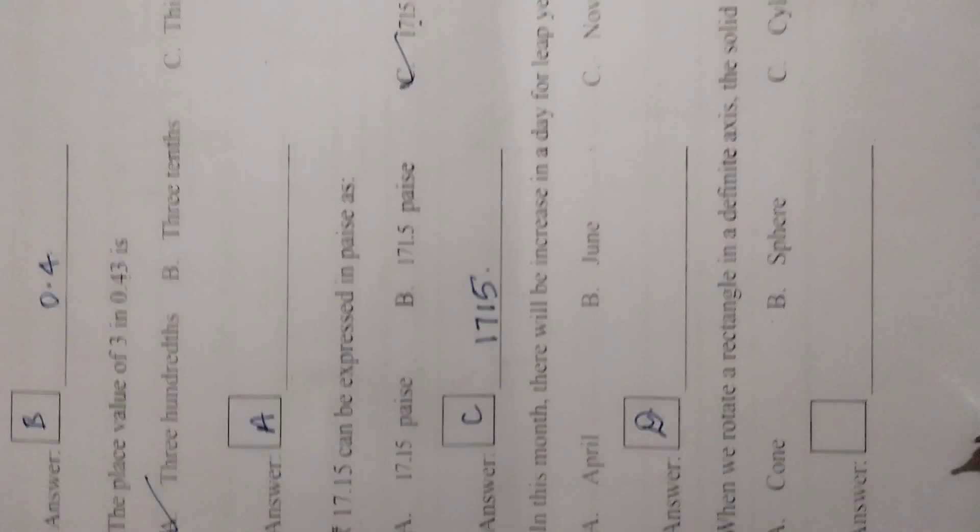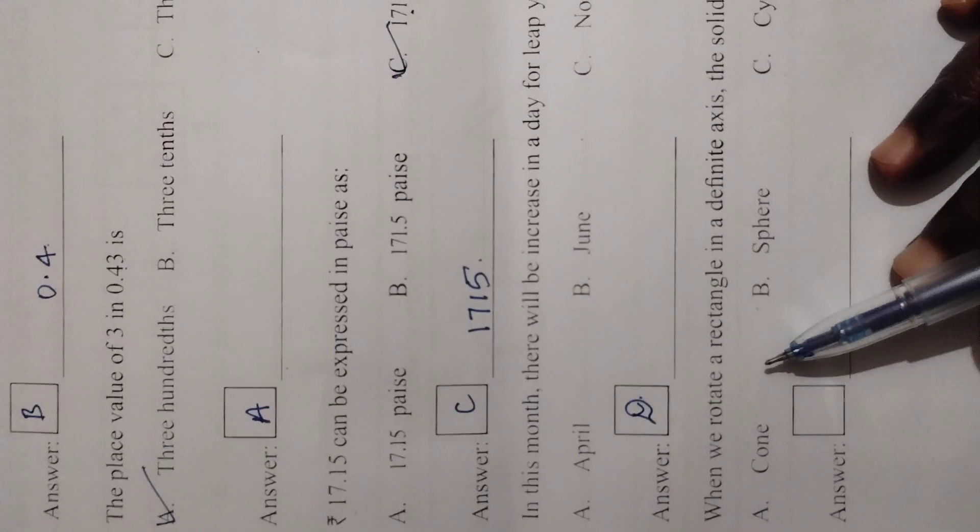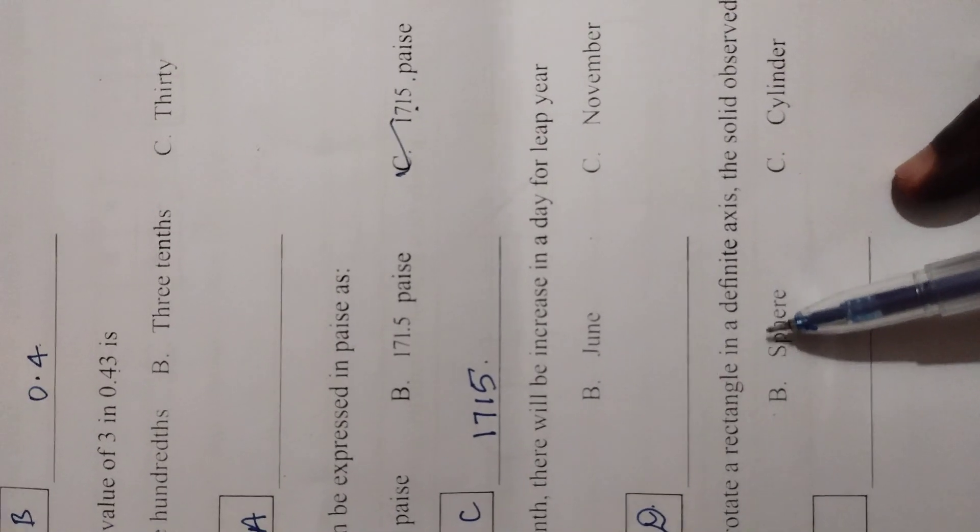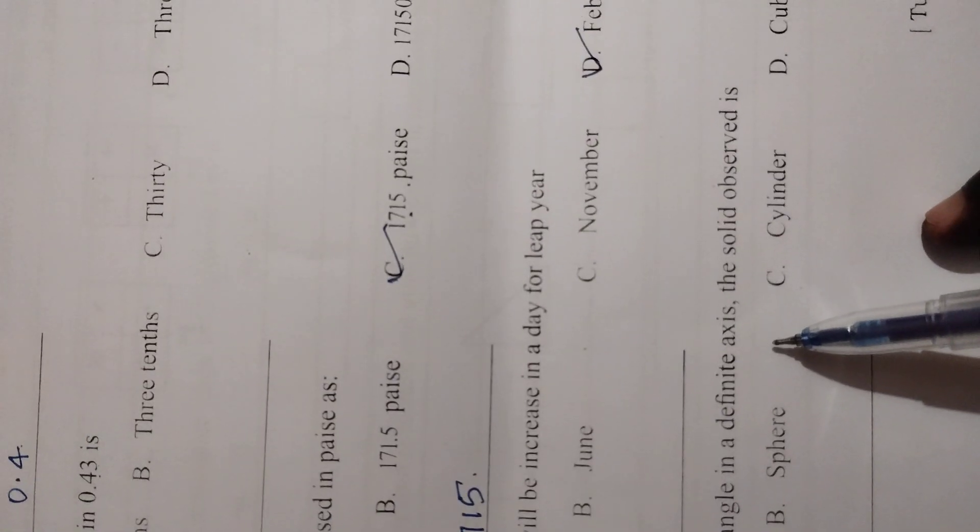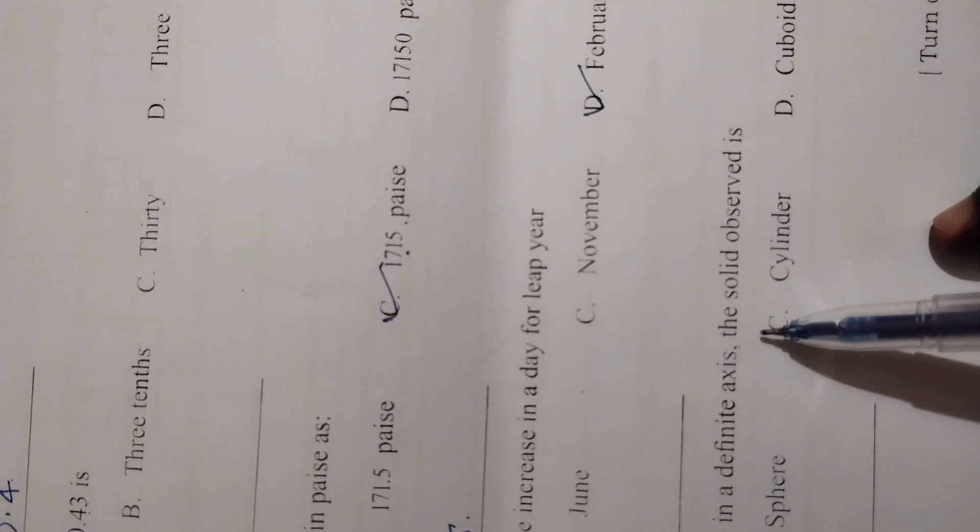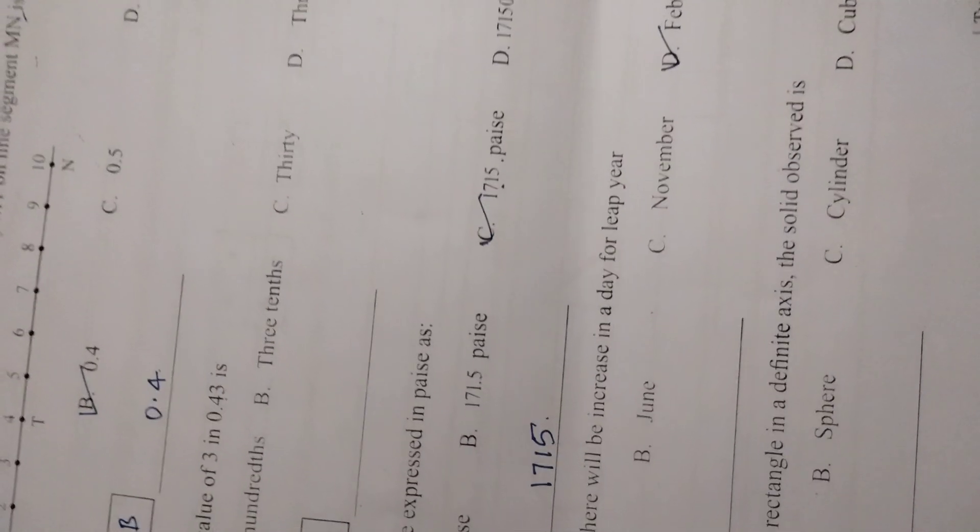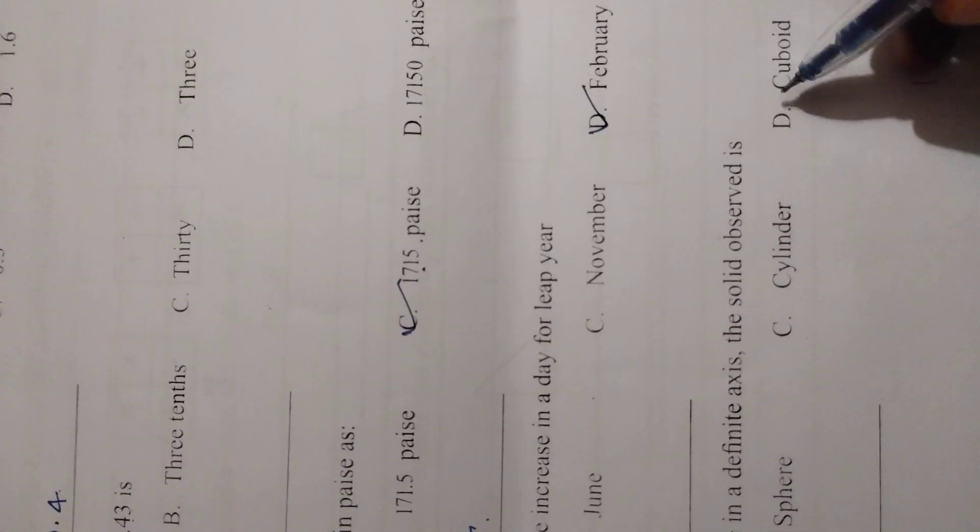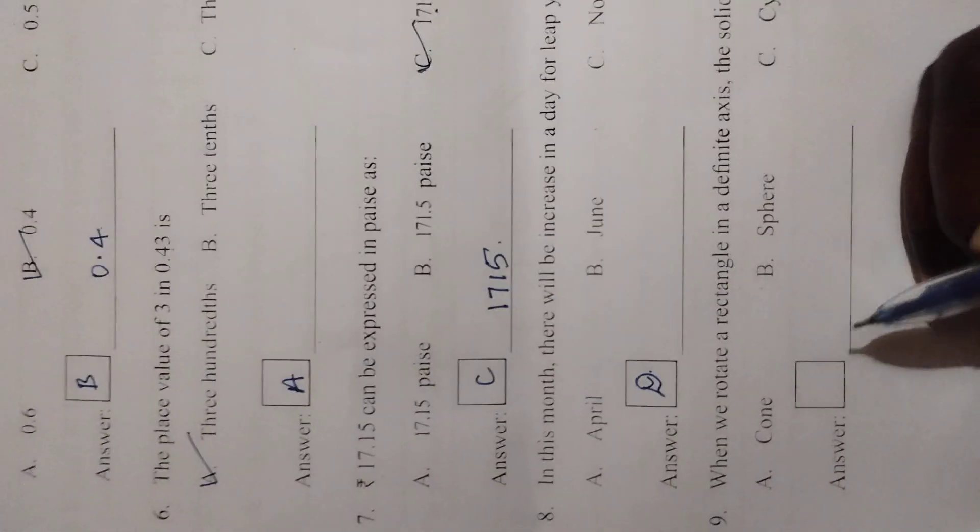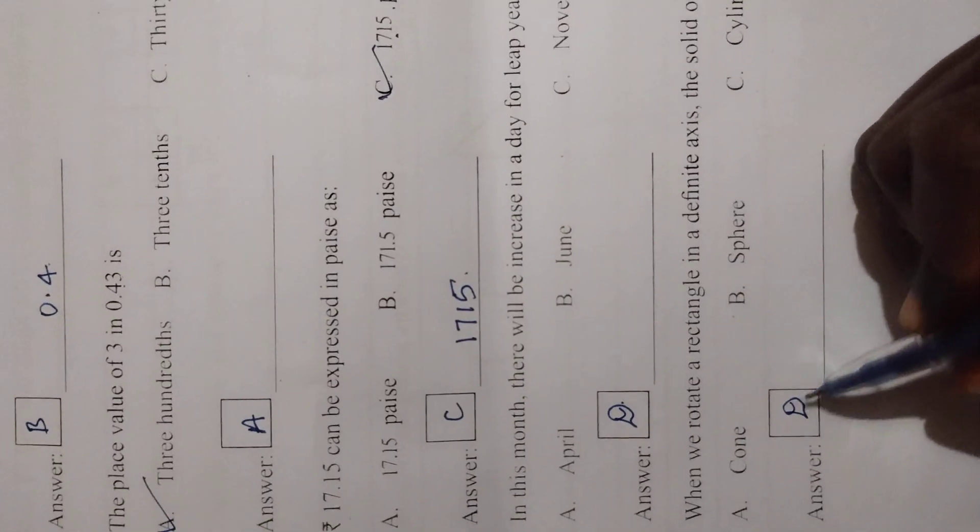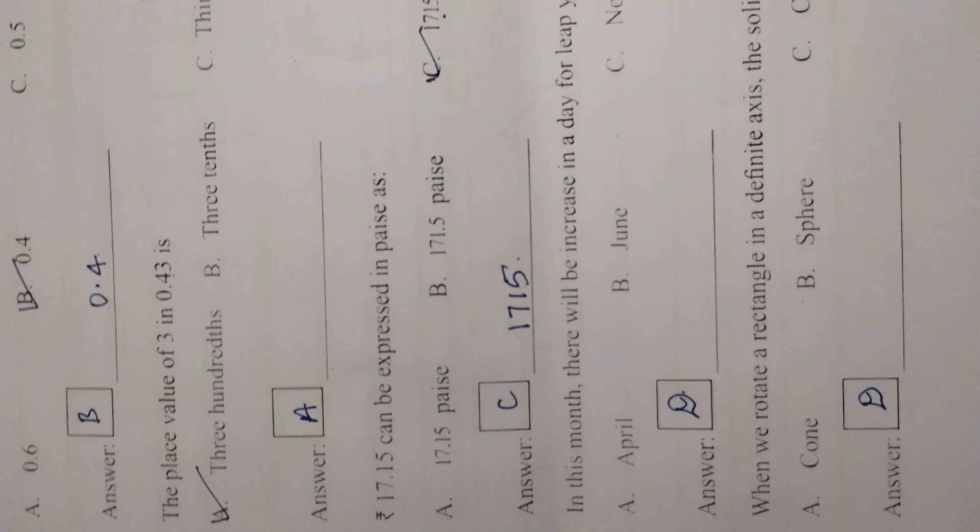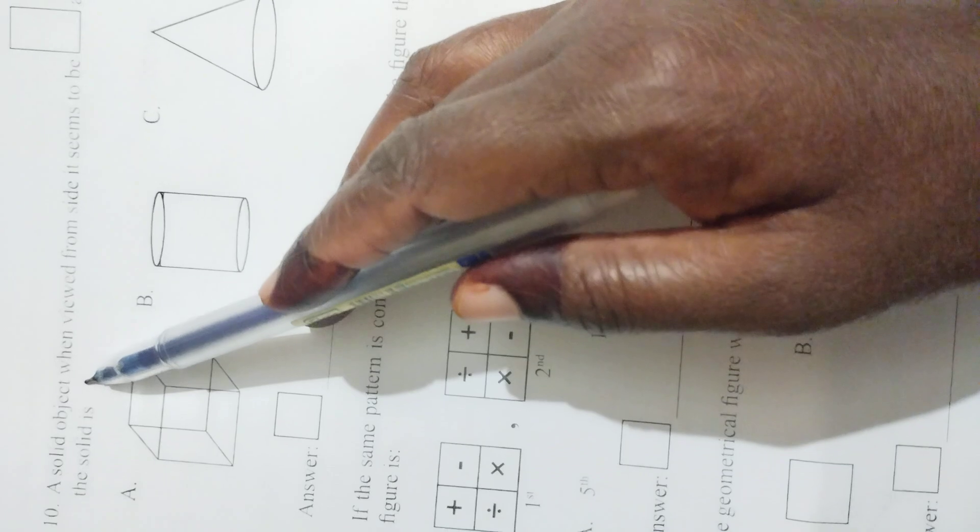Next, when we rotate a rectangle on a definite axis, the solid observed is a rectangle means cuboid shape. You can see cuboid. You can write here D.